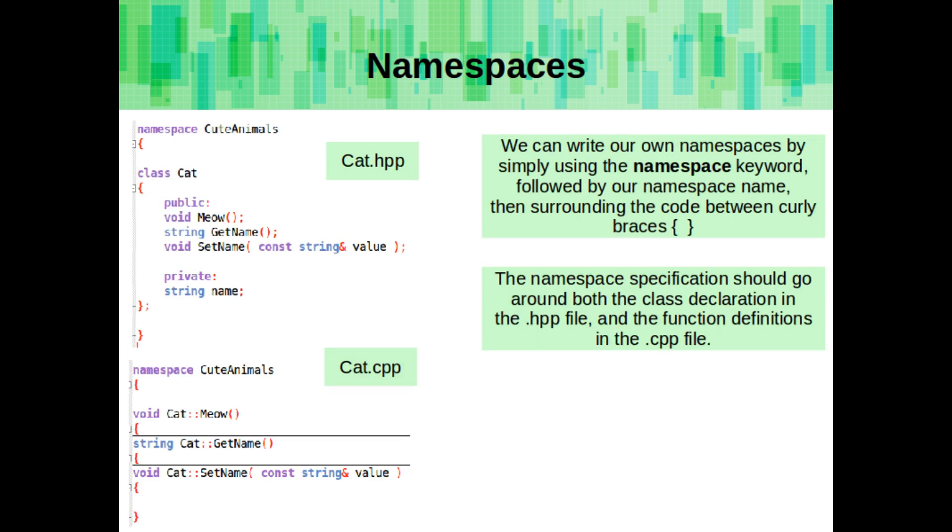So we can use namespaces to mitigate this by specifying exactly where our functions and classes are coming from. We can write our own namespaces simply by using the namespace keyword followed by our namespace's name, then surrounding the code between with curly braces.